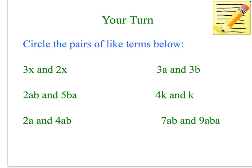So I am going to circle this one because 3x and 2x is exactly the same variable, they both have just x. Now the next one, 3a and 3b, no, they are different. They have different variables.